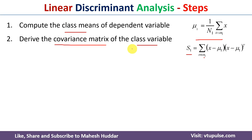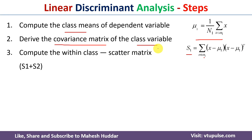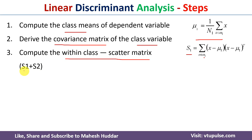Once we have calculated the covariance matrices for all classes — assuming we have two classes — we need to compute the within-class scatter matrix, which is the sum of all those covariance matrices. Since we have two classes, we add the covariance matrices S1 and S2 to get the within-class scatter matrix, represented by SW.